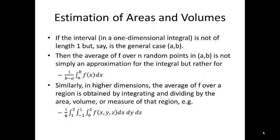Similarly, in higher dimensions, the average of f over a region is obtained by integrating and dividing by the area, volume, or measure of that region. For example, the integral below would have to be multiplied by 1/8 because the sum of the individual units would sum up to 8. This is the average of f over the parallelepiped described by x from 0 to 2, y from -1 to 1, and z from 1 to 3.